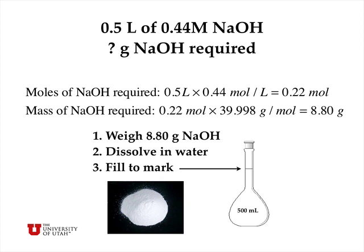The procedure would be to weigh out 8.8 grams of sodium hydroxide on a balance, dissolve it in a small amount of water, put it into a 500 milliliter volumetric flask, and fill with water to the mark. That way you'd have a total volume of 500 milliliters and 0.22 moles of sodium hydroxide, giving a 0.44 moles per liter solution.